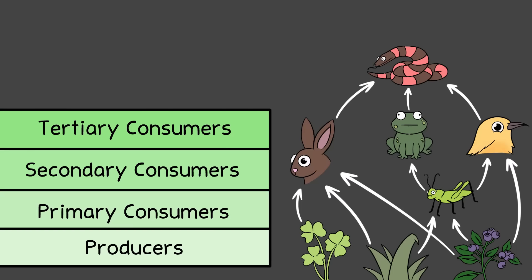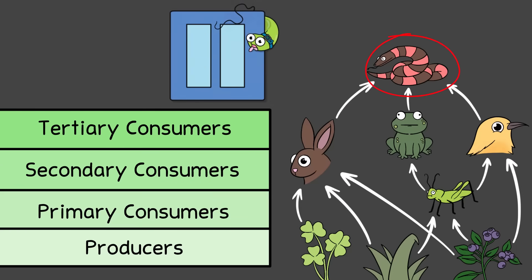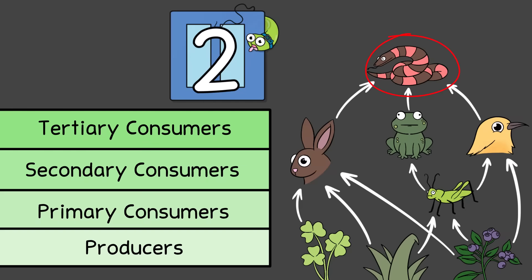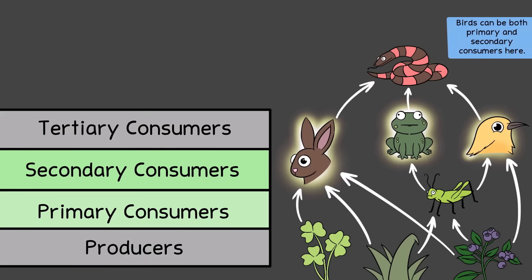If you look at this specific food web here, snakes would be feeding on which consumer levels? In this food web, snakes feed on primary consumers and secondary consumers.